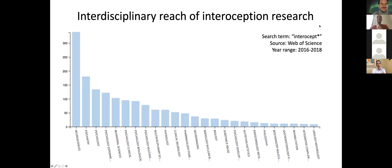If you look at recent articles published on interoception, you can see it is an incredibly interdisciplinary field. Looking at articles from the past three years that reference the term directly, most prominently neurosciences and psychiatry and psychology are the fields that have paid attention to this topic. But you also see philosophy, many medical subspecialties, neuroimaging, and neurology. It really is a broad-ranging concept, which in some ways makes it difficult to wrap your mind around.